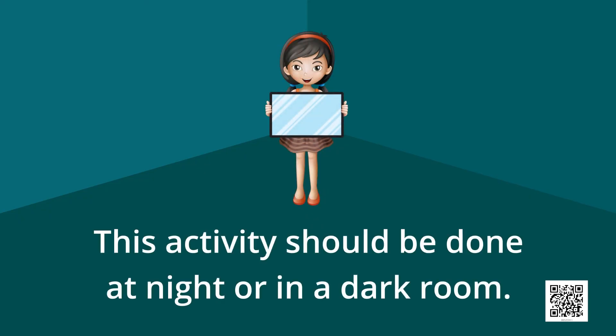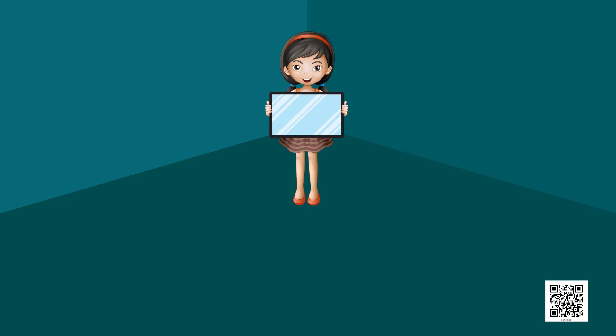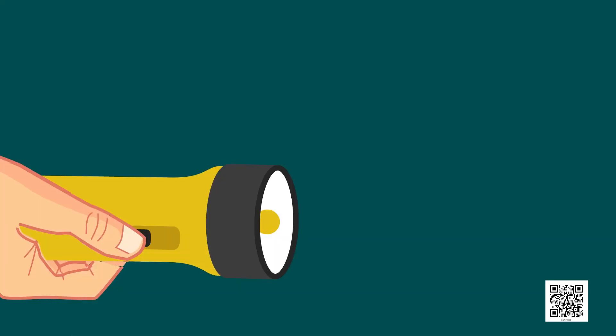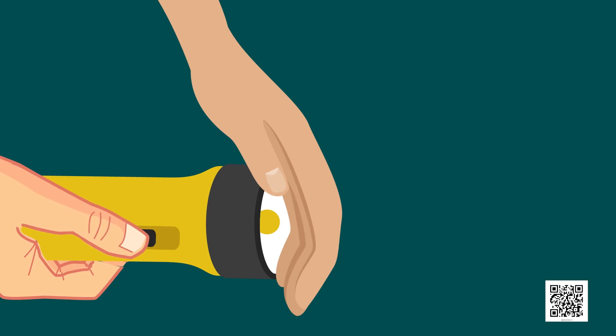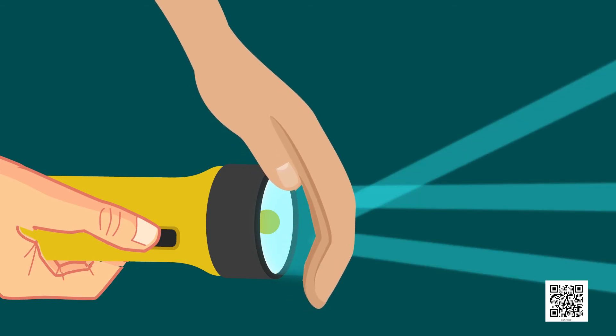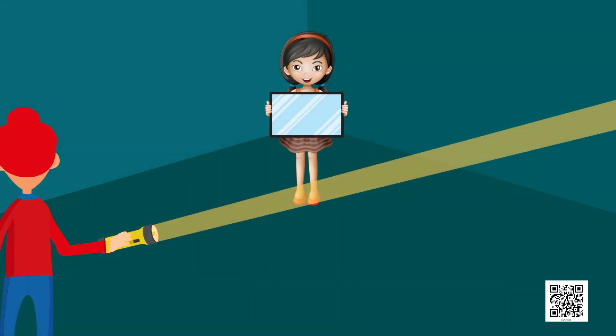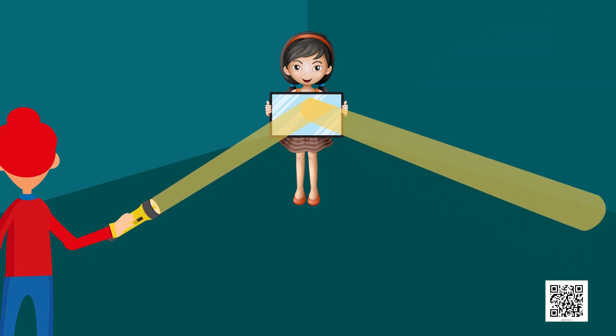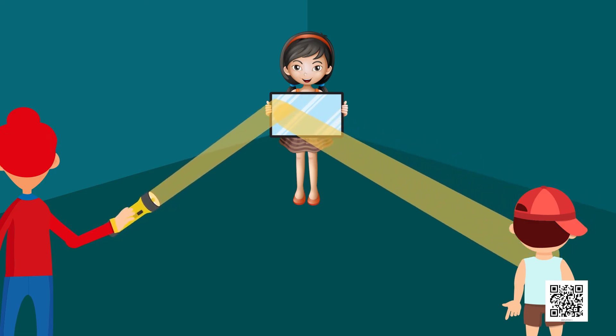This activity should be done at night or in a dark room. Ask one of your friends to hold a mirror in his or her hand at one corner of the room. Stand at another corner with the torch in your hand. Cover the glass of torch with your fingers and switch it on. Adjust your fingers with a small gap between them so that you can get a beam of light. Direct the beam of the torch light onto the mirror that your friend is holding. Do you see a patch of light on the other side? Now adjust the direction of the torch so that the patch of light falls on another friend standing in the room.